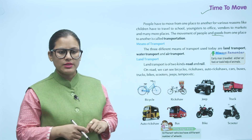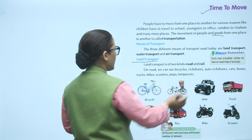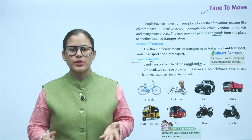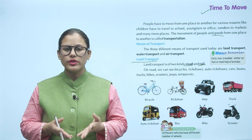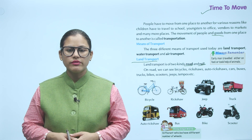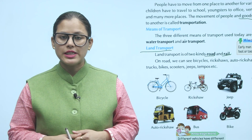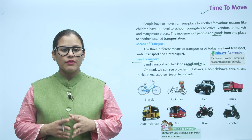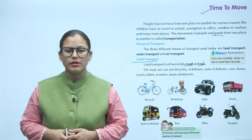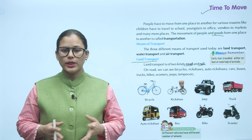Looking at the main types of transport — for land transport, on road you have vehicles like bicycles and cars, and on rail you have trains. Always remember, early men traveled either on foot or took help of animals. Different vehicles have different number of wheels — for example, a bike is a two-wheeler and a bus is a four-wheeler.